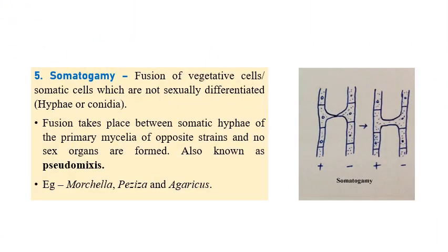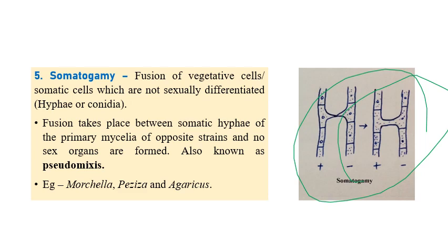The last type of plasmogamy is somatogamy. This is not true sexual reproduction — no sex cells are involved. Instead, somatic or vegetative hyphae of opposite strains (plus and minus) make contact, forming a passage through which nuclei are exchanged between the two strains. Because no true sex cells are involved, it is also known as pseudomixis. Morchella, Agaricus, and similar mushrooms can reproduce by this mechanism.